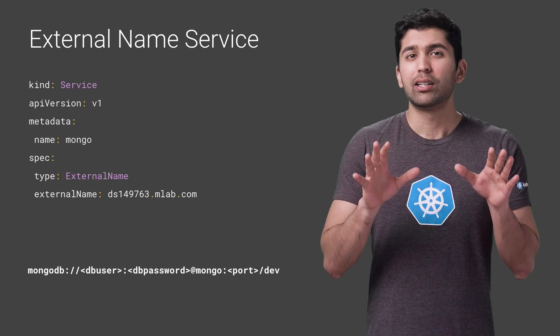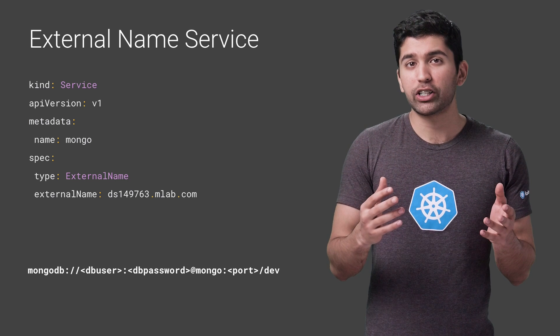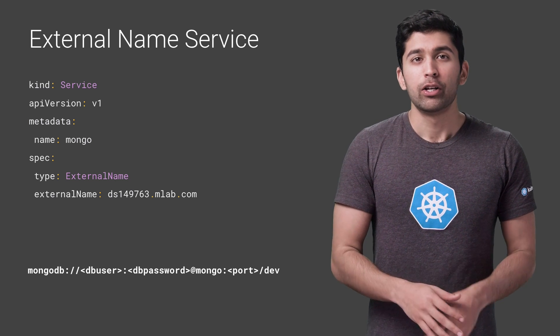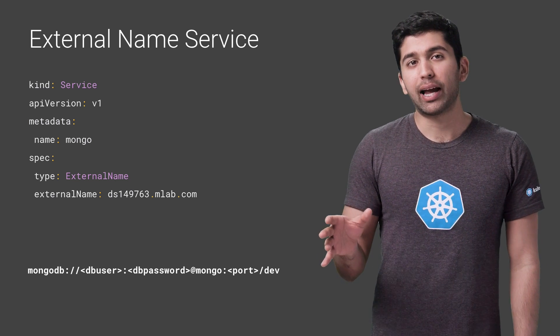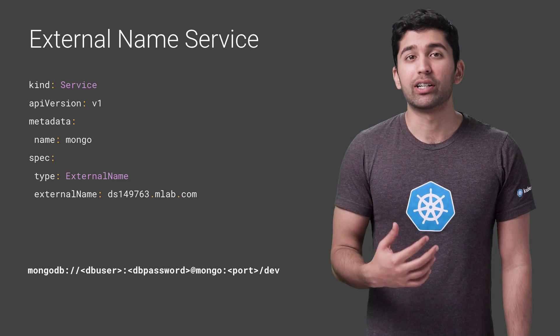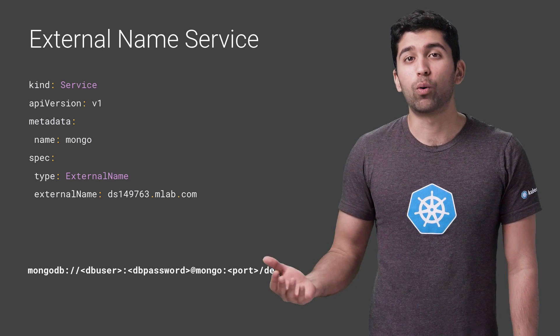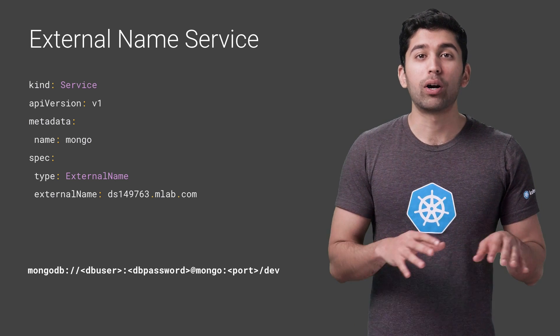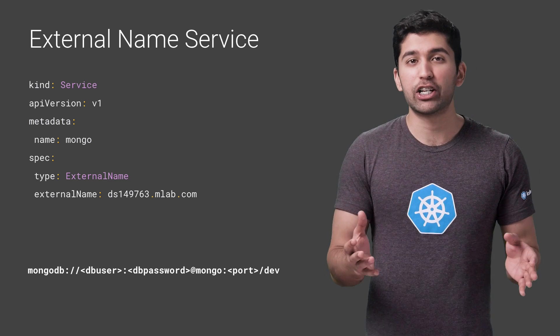But because ExternalName uses a CNAME redirection, it can't do port remapping. This may be okay with services that have static ports, but unfortunately it falls short in this example where the port is dynamic. MLAB's free tier gives you a dynamic port number and you can't change it, which means you need a different connection string for development and production and you need to hard code values for the port — which is bad.